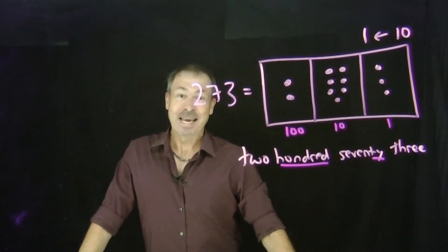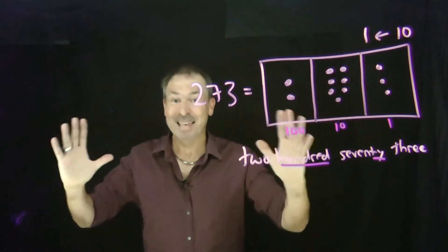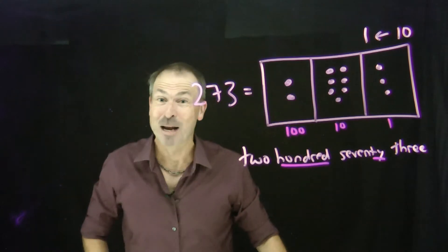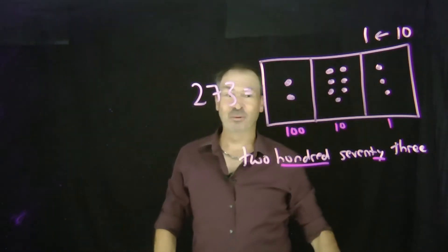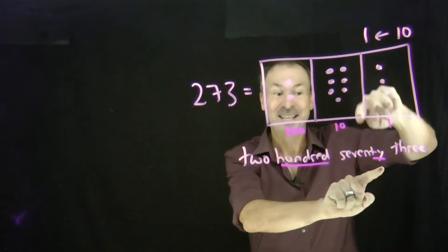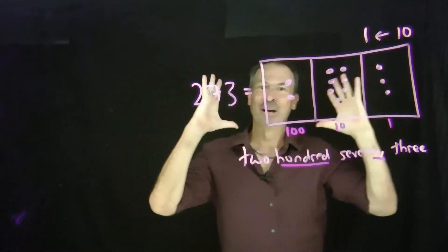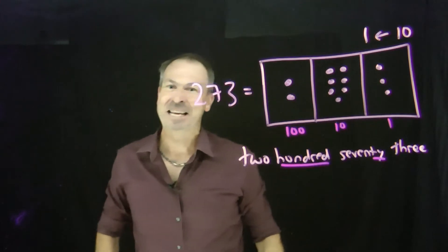We just learned in our current English-speaking culture that we think and speak in a base ten system. The number 273 is literally 200, 7 tens, and 3. We speak, say, and think in base ten.